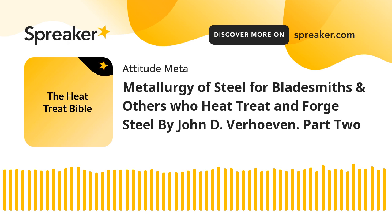To understand the pearlite microstructure, consider a 1077 steel that is heated in a hot stage microscope to 800°C (1472°F). As shown in Fig. 3.7, the steel will consist of all austenite grains after just a minute or two at 800°C. After cooling to a temperature below A1 and holding for 5 to 10 minutes, the austenite grains will be completely replaced by a new set of pearlite grains. Contrary to all the grains we have discussed up to this point, the pearlite grains are not a single phase; rather, they consist of a mixture of two phases (alpha plus CM) having a unique microstructure.